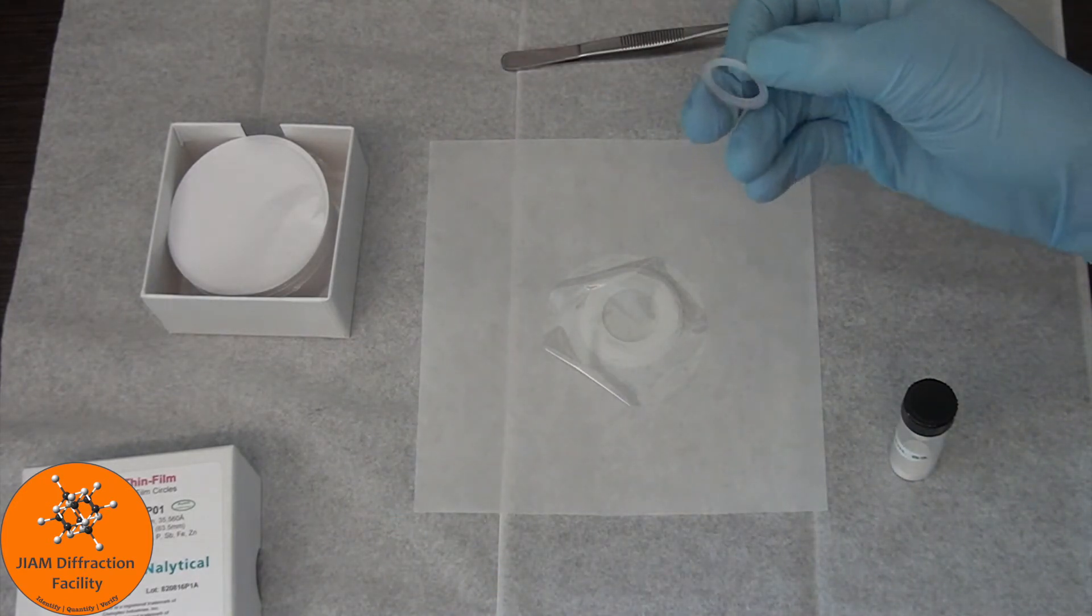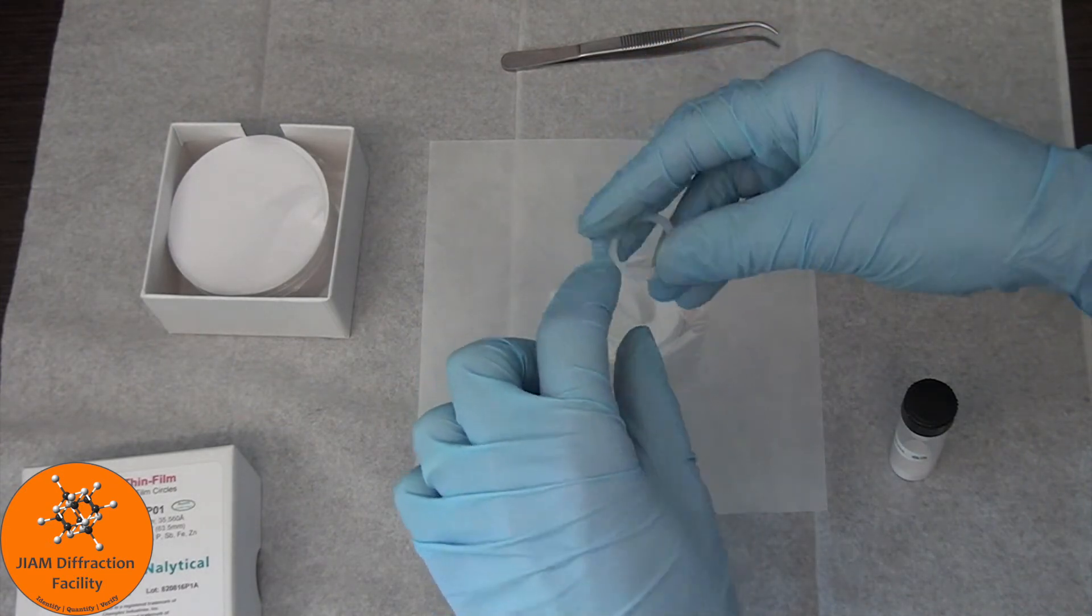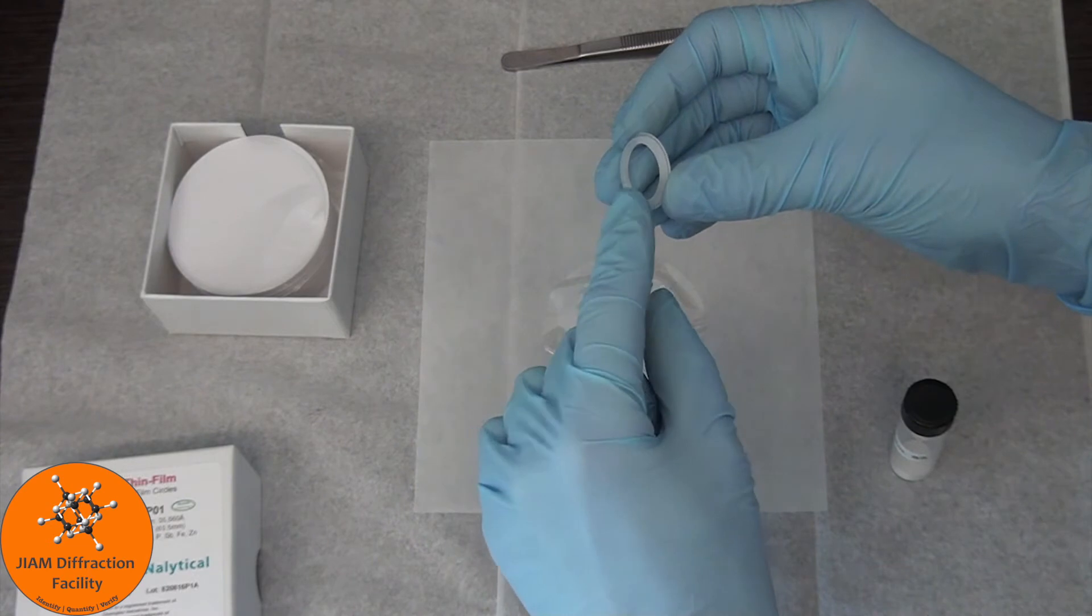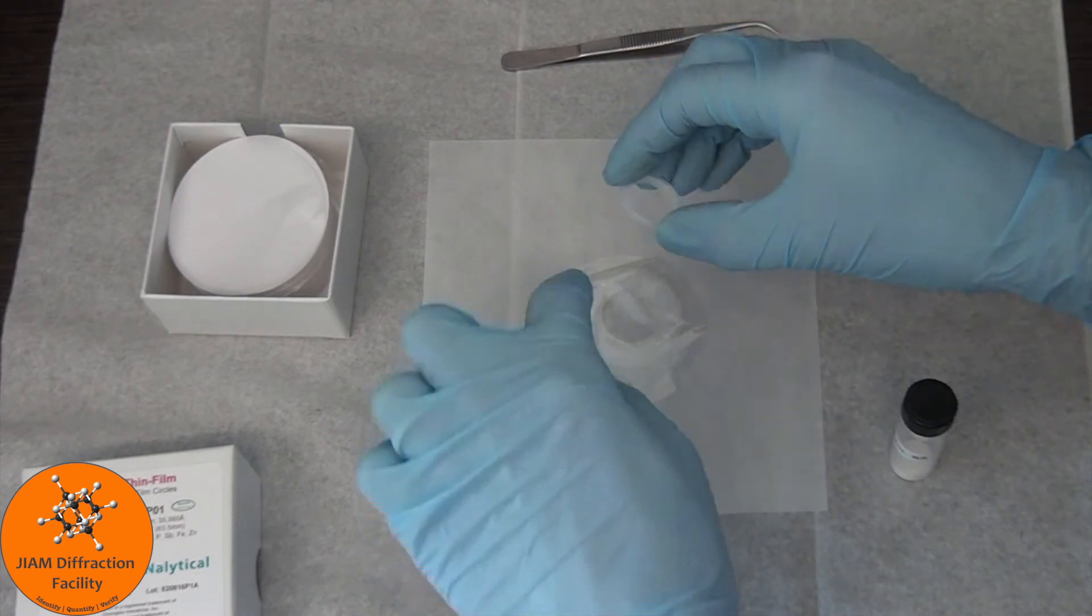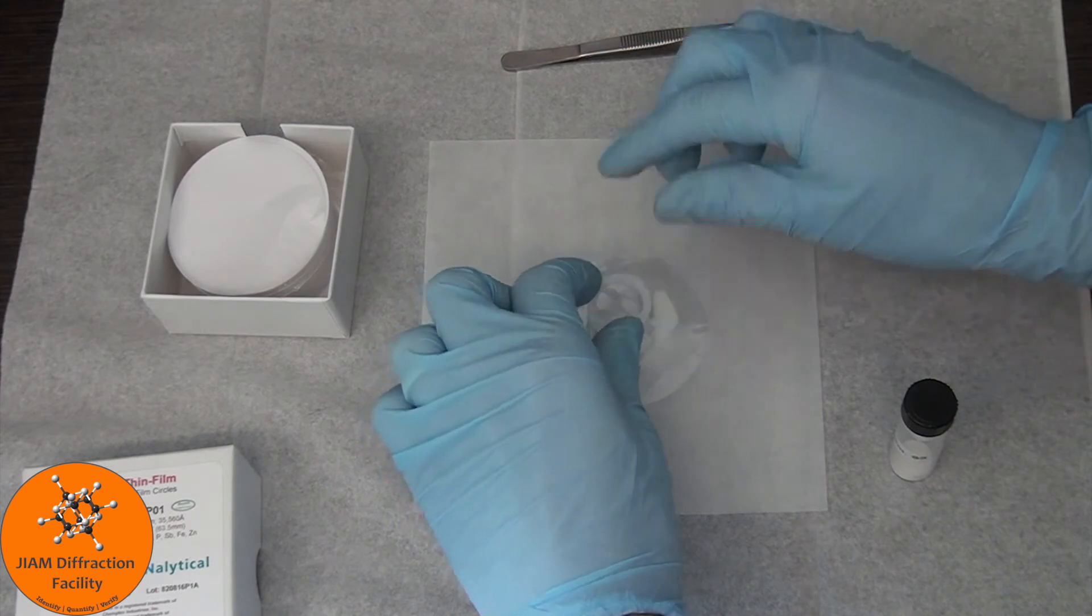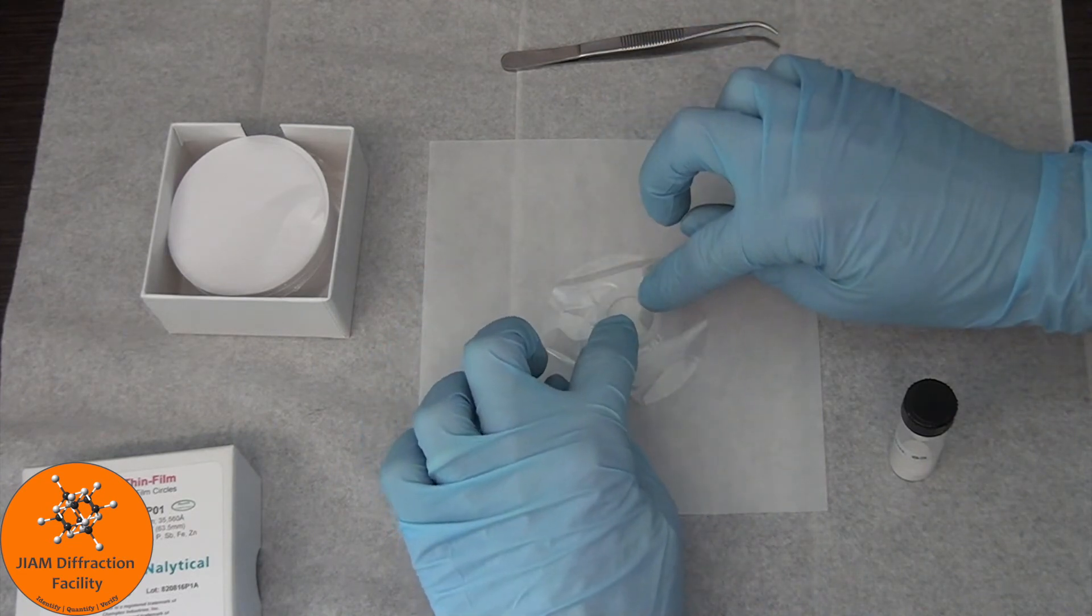We then have this smaller piece that also has a flat side and a raised side. But this time, we want to have the raised side face down, and we will put it in the center of the larger piece, and then just press down.